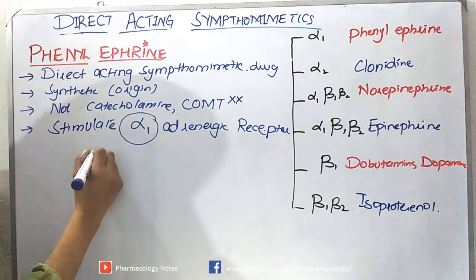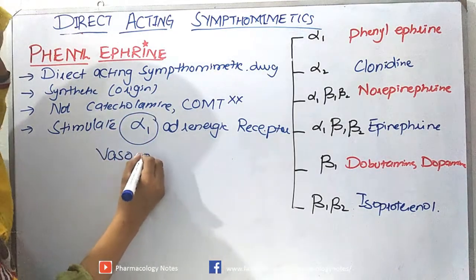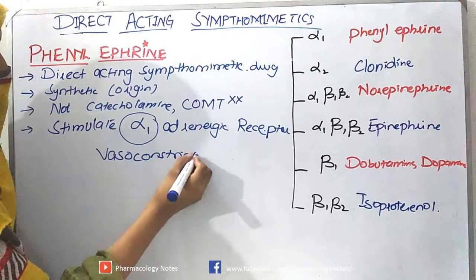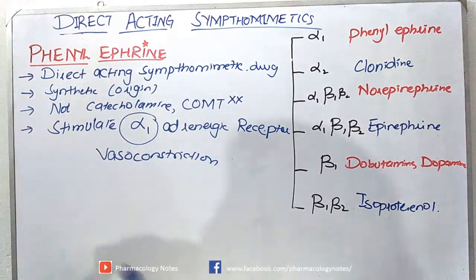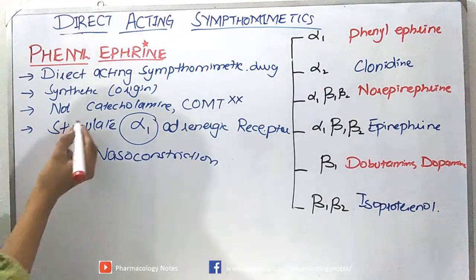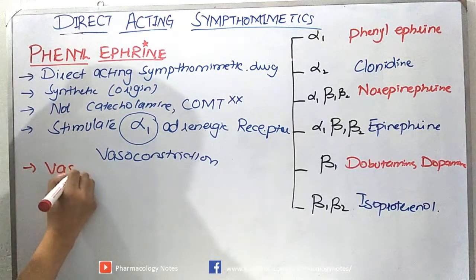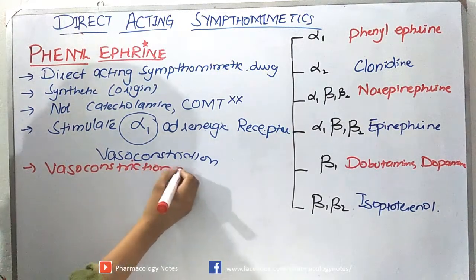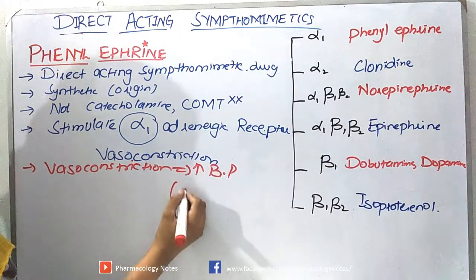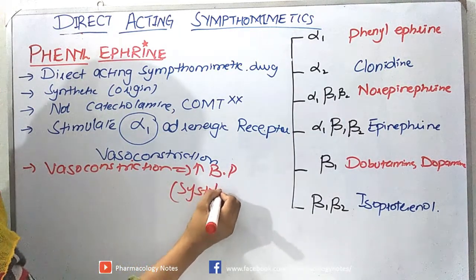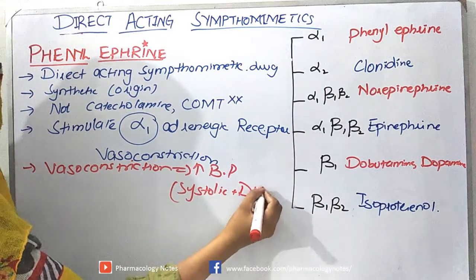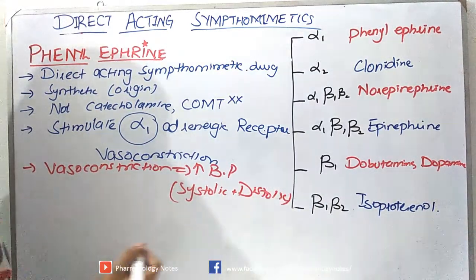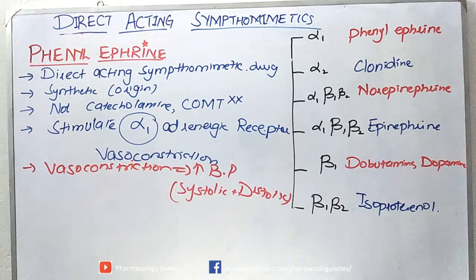Alpha-1 receptors are responsible for vasoconstriction. So phenylephrine, by activating these receptors, causes vasoconstriction and thus increases blood pressure by increasing both systolic and diastolic blood pressure. It is therefore used as a drug to increase blood pressure.